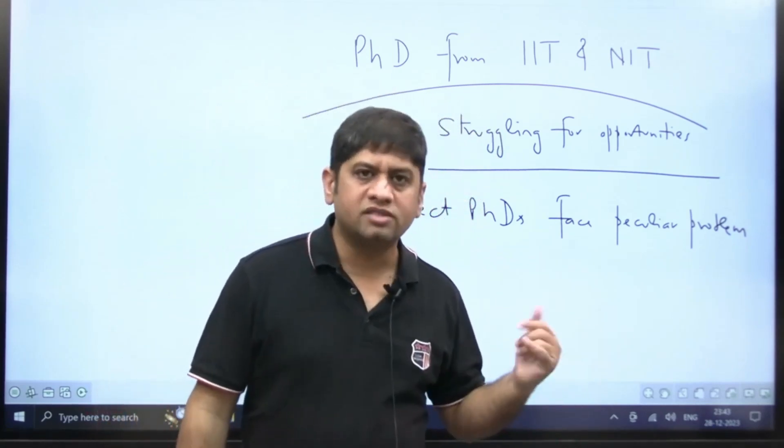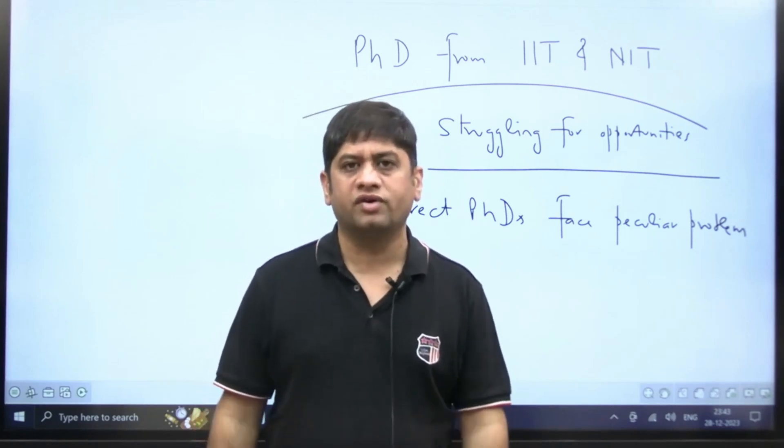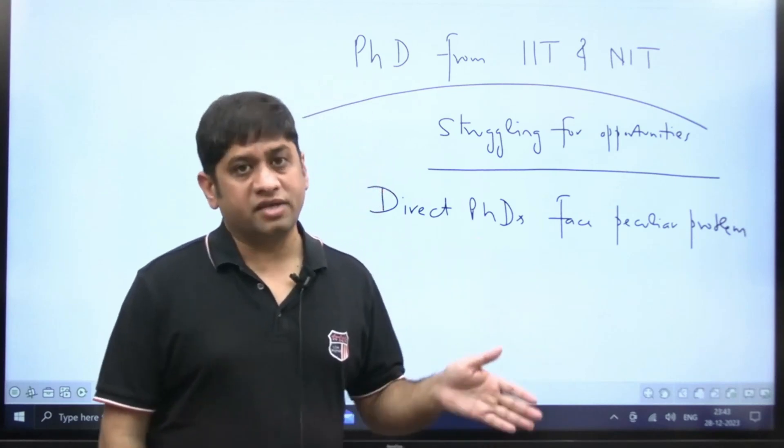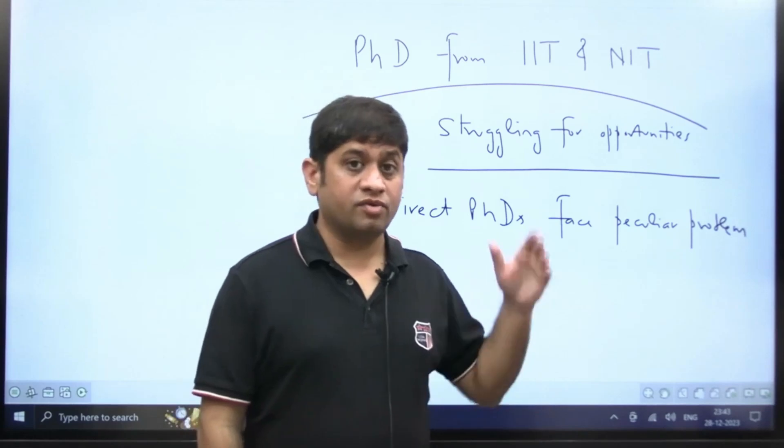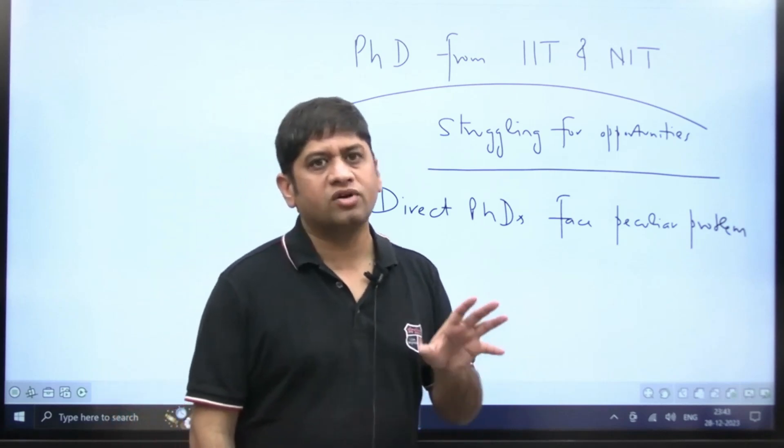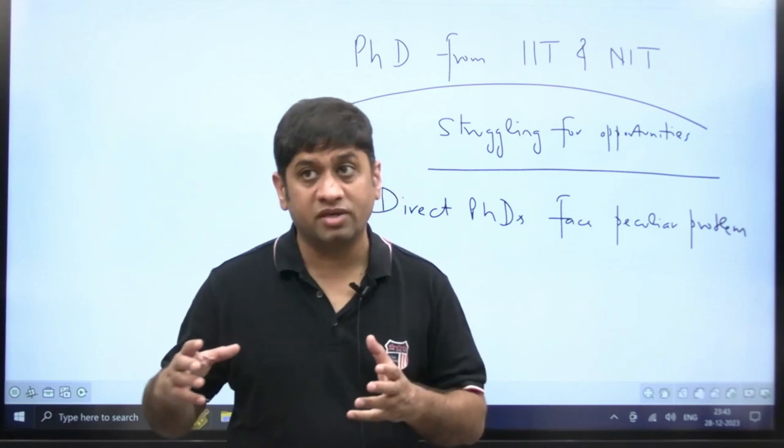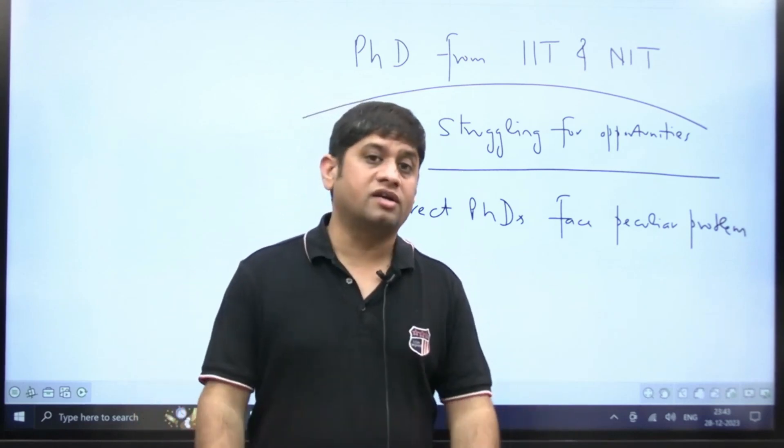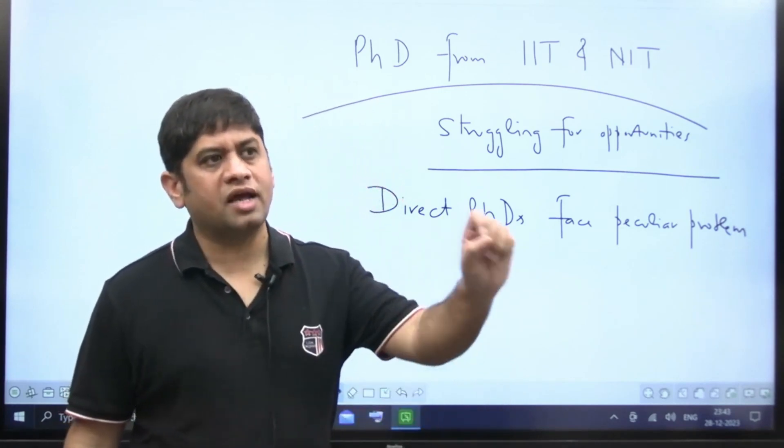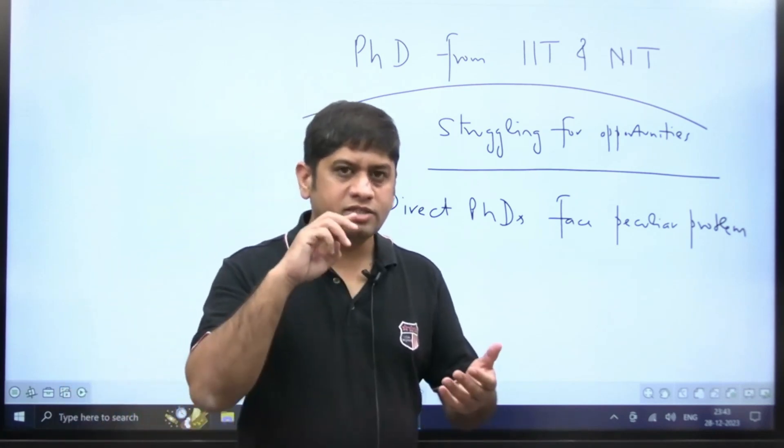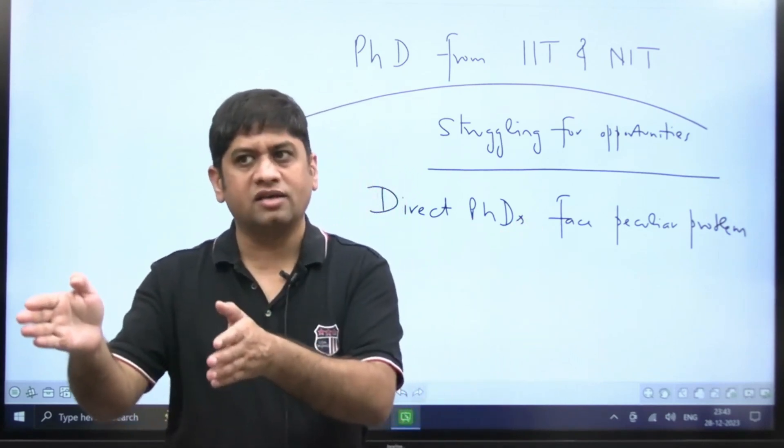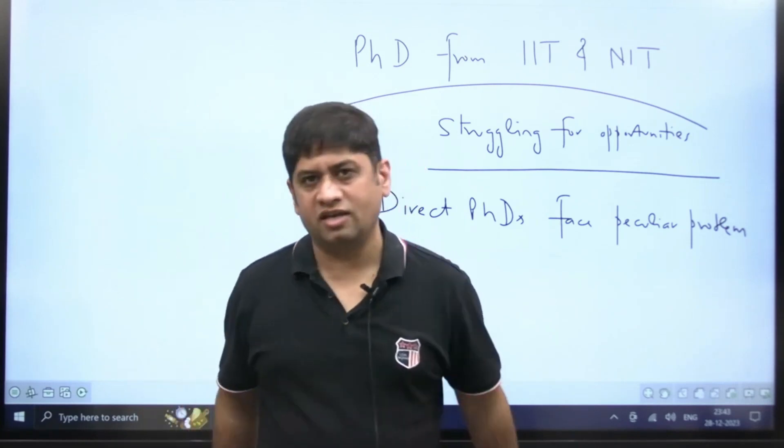Today I got a call from one PhD fellow who is working as a faculty now. He brought to my notice one peculiar issue. He said that he has done direct PhD from a top IIT, and now after PhD he started applying for teaching positions. What he found was that in some state universities and centrally funded technical institutes, there are 25 marks given to those who have MTech. There were 25 marks given to MTech and only 10 or 5 marks according to API scale given to PhD.